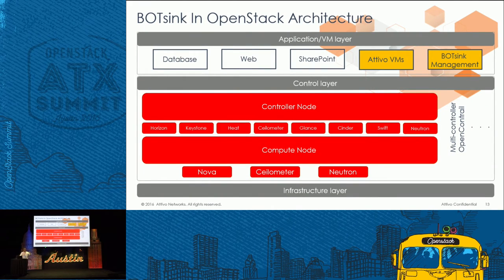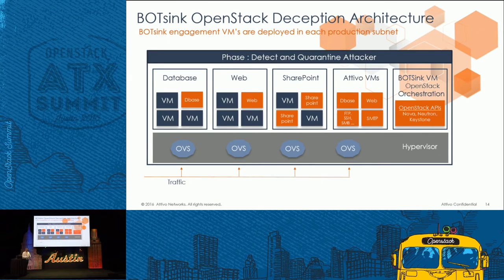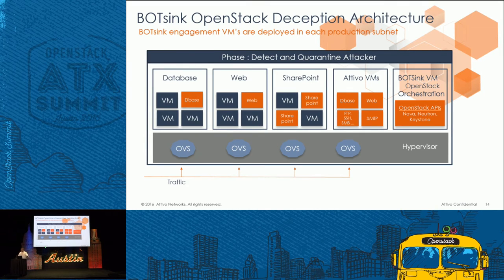For OpenStack, it doesn't matter which infrastructure layer, hypervisor, or controller you have — we live in the application layer in the VMs. You import our management VM through your Heat orchestration template, and then use it to deploy our VMs across tenants, in-tenant, or as their own tenant. Those VMs talk back to our management server, giving you a single pane of glass to look at attacks. If you have multiple instances of the management servers — multiple virtual appliances — we have a central manager that can aggregate from multiple machines and look at those alerts, unless you want everything to go to your SIEM.